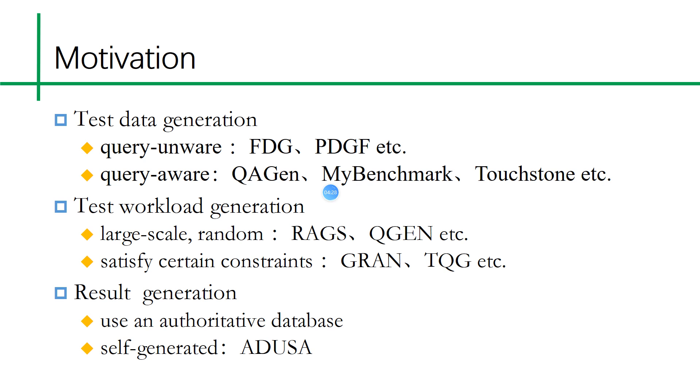In terms of workload generation, one is large-scale random workload generation, such as Ragus and QGene, which can generate a large amount of workload in a short time to serve test needs. The other is to generate workloads that meet certain constraints. When generating workloads, consider test coverage and cardinality constraints. In order to verify the correctness of the query execution, we usually need to use an authoritative database to execute the same workload again and then compare the results.